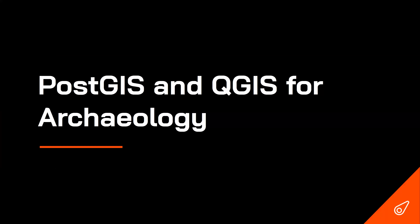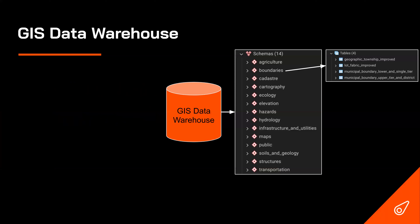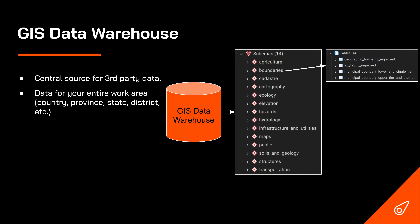PostGIS and QGIS for archaeology is a great solution. We often start by building a GIS data warehouse — a central source for all third-party data for your entire work area, whether that's a country, province, or district. This is read-only for most users. In this example we have 14 different schemas including a map schema, public schema, and within the boundary schema: geographic townships, lot fabric, municipal boundaries for lower and upper tier. All users load these layers from the exact same centralized location.